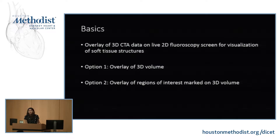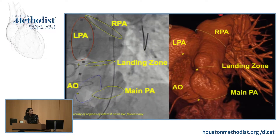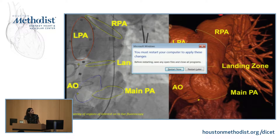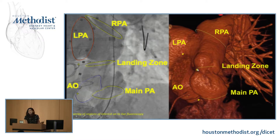Alternatively, you can have regions of interest that are marked on your pre-procedural CT angiogram and project these to live 2D fluoroscopy. This is also a patient with tetralogy of Fallot who presented with pulmonic regurgitation. On the right you see the CT data set and the regions of interest — the landing zone, the main PA, the right and left pulmonary arteries — marked as yellow circles. Performing the image fusion allowed us to project these regions of interest onto live 2D fluoroscopy.